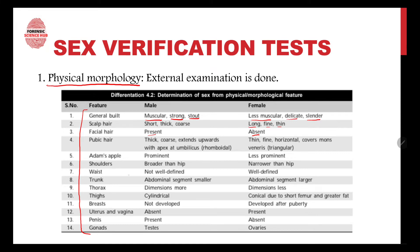The shoulders are broader than the hip in males; in females, the shoulders are narrower than the hip. The waist is not well defined in males but is well defined in females. The abdominal segment is smaller in males and larger in females. The thorax dimension is greater in males. Thighs in males are cylindrical, whereas in females they are conical due to a shorter femur and greater fat. Males have no breast development; females develop breasts after puberty.